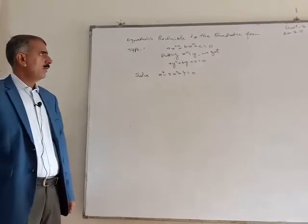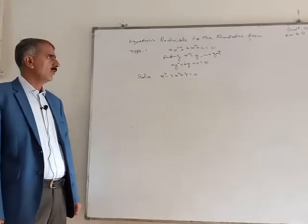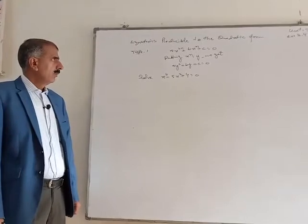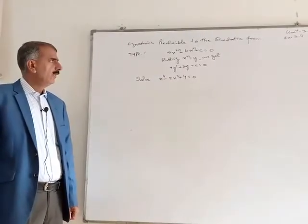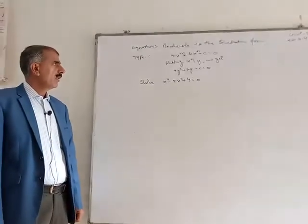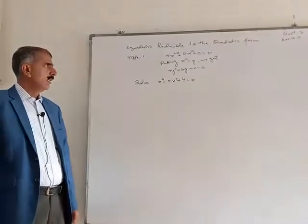The general form is: a squared plus b times x to the n plus c is equal to 0. Now putting x to the n equal to y, we get a y squared plus b y plus c.